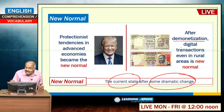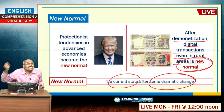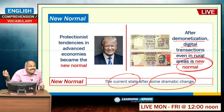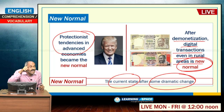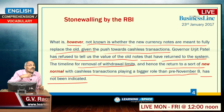New normal should be understood clearly — it is to be used only when some dramatic change occurs. For example: once diesel vehicles switch to electric vehicles, 'electric vehicles is the new normal.' Another example: protectionist tendencies in advanced economies becoming the new normal — protectionism being the opposite of globalization. After demonetization, cashless transactions represent the new normal in comparison to pre-November 8.